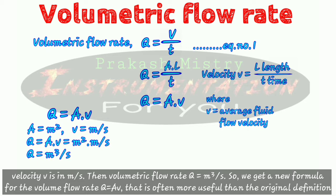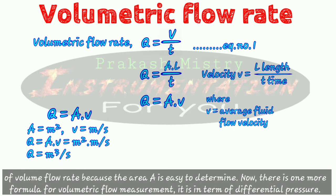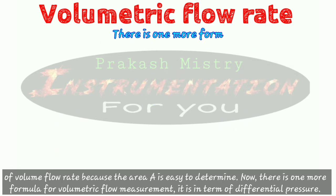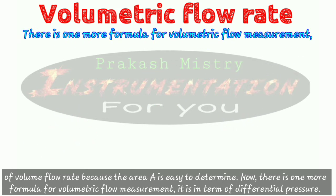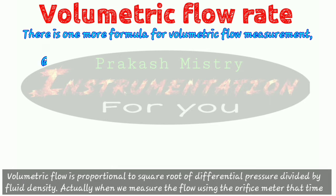So we get a useful formula for the volumetric flow rate: Q is equal to A times V. This formula is often more useful than the original definition because the cross section area A is easy to determine. There is also one more formula for volumetric flow measurement — it is in terms of differential pressure.